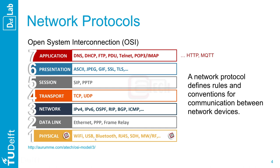Beyond the physical layer, the Internet is especially characterized by Ethernet, IP, and TCP, respectively from layers 2, 3, and 4. Presenting information at layer 6 involves data translation, encryption, and compression. At the highest level, application protocols such as HTTP and MQTT define the purpose of the interaction between two devices.